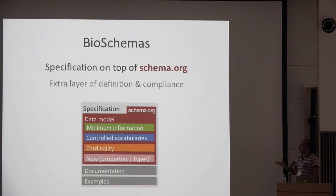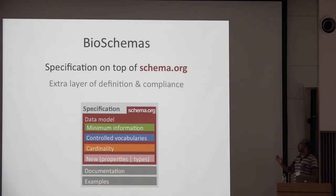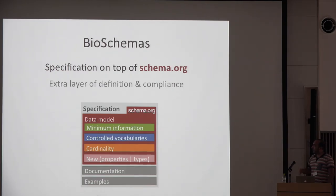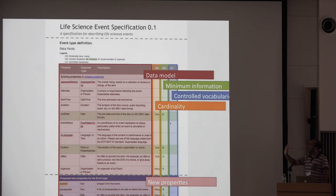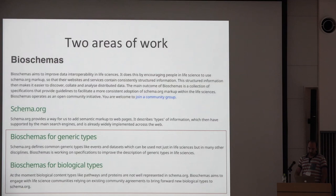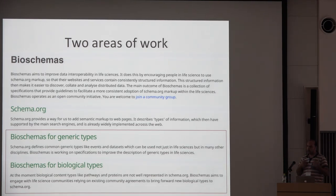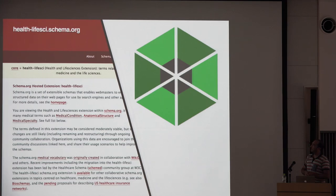Bioschemas is an initiative that tries to improve the definition of schema.org types — an extra layer that adds minimum information, controlled vocabularies, cardinality, and properties important for life science. The specification combines the data model inherited from schema.org with extra information from Bioschemas. It works on generic types like training materials, events, and databases, and we want to push further into defining biological types in collaboration with the Health Life Science Group.